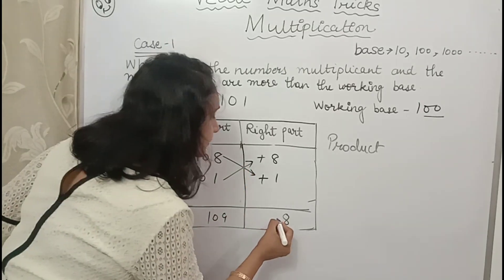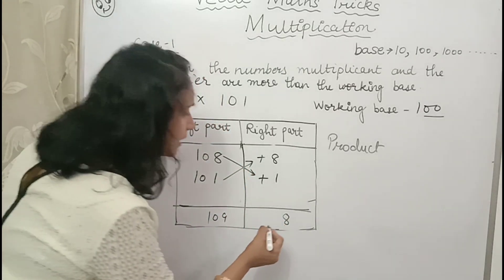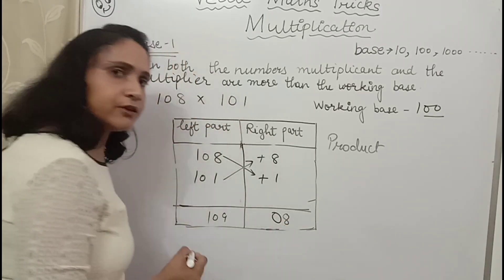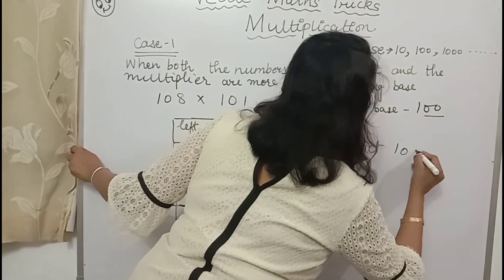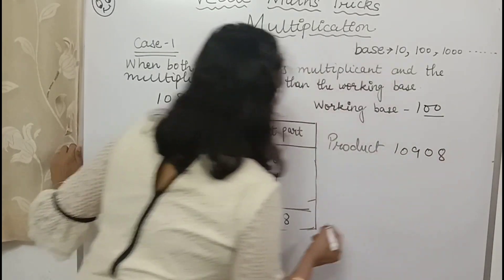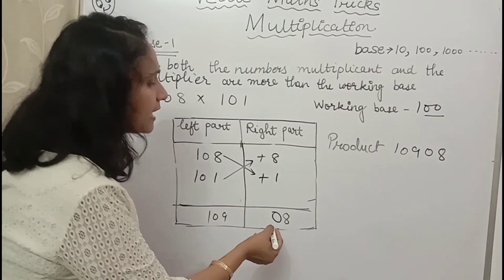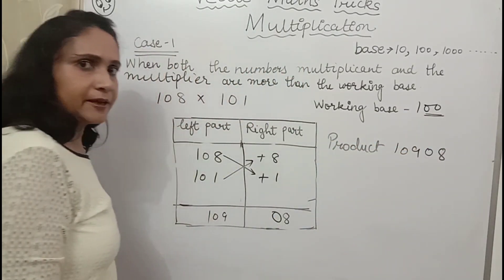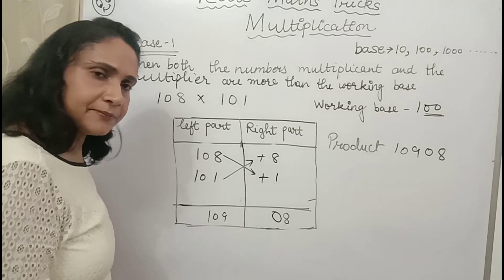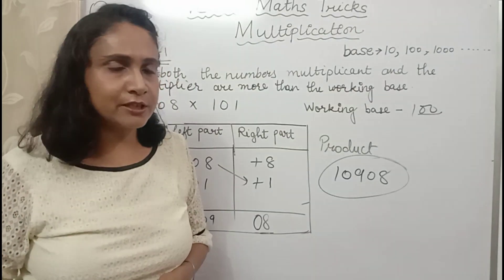See, here I have 1 digit. So what will I do? I will put a 0 in front of the number. See, 10908. Now the product is 10908. Right part should always have same number of digit as the zeros in working base. This you have to see. I hope you have understood this method.